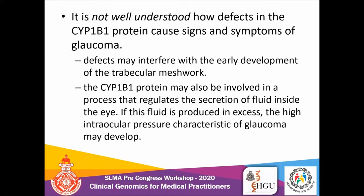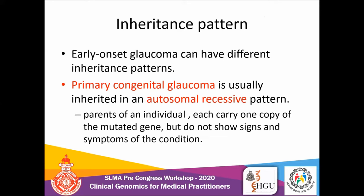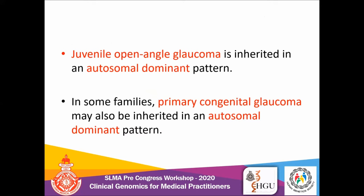The exact mechanism of the CYP1B1 gene is still not very well understood in the literature. Either excess production or a draining defect can lead to glaucoma. Regarding inheritance patterns, primary congenital glaucoma follows an autosomal recessive pattern, while juvenile open angle glaucoma follows an autosomal dominant pattern. Some families with primary congenital glaucoma also show autosomal dominant inheritance, so both autosomal dominant and recessive patterns exist.